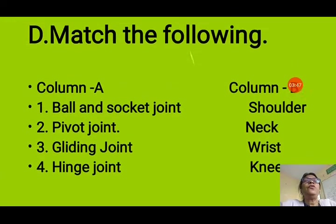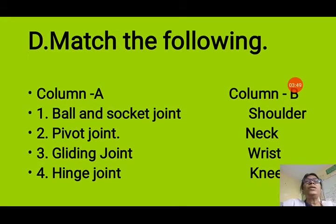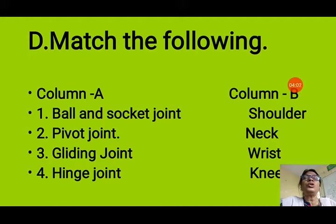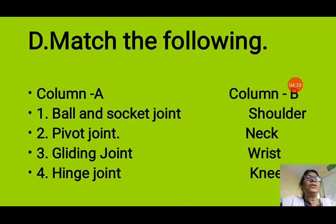Exercise D — Match the following. Ball and socket joint is present in the shoulder. Pivot joint is present in the neck. Gliding joint — our wrist and ankle have gliding joints, so we match gliding joint with wrist. Hinge joint — our knee is a hinge joint because it allows movement in only one direction, so it is matched with knee.